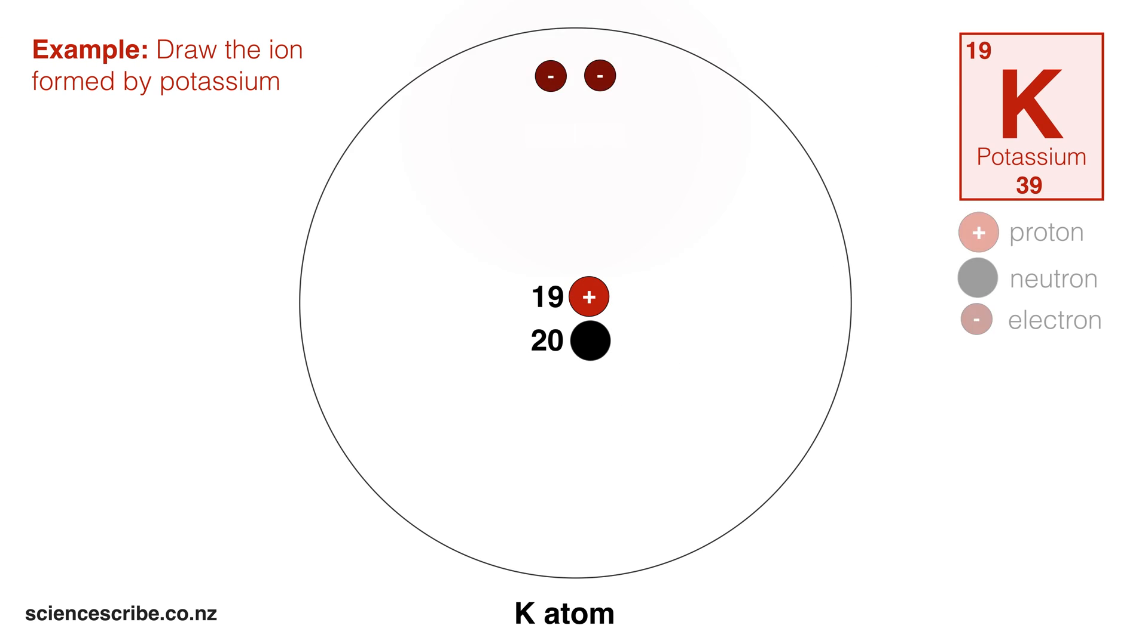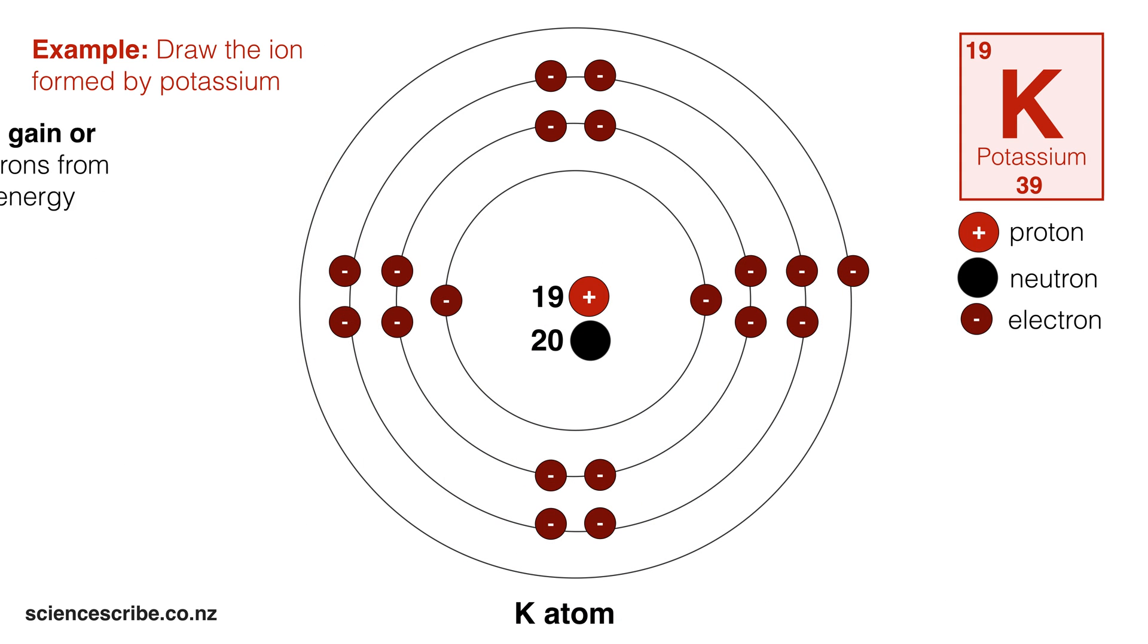In our next example, we're going to look at how to draw the potassium ion. To start things off, we need to start by drawing a diagram with a potassium atom. Remember that atoms are going to gain or lose electrons from the outer energy level in order to form an ion.